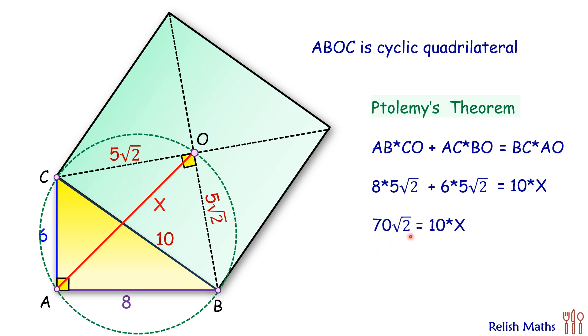...we get 70 root 2 equals 10x, or x equals 7 root 2 centimeters, and that's our answer. I hope you enjoyed the solution. I will see you in the next video. Till then, tata bye bye.